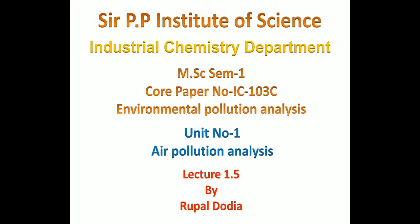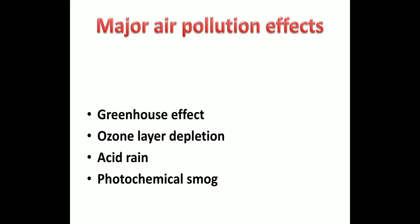Hello students. In my earlier session I discussed common air pollutants and their effects on men and materials. We also learned about general pollutant effects. Today we are going to discuss major air pollution effects — from primary and secondary pollutants. There are mainly four effects: greenhouse effect, ozone layer depletion, acid rain, and photochemical smog. These four effects are important for exams.